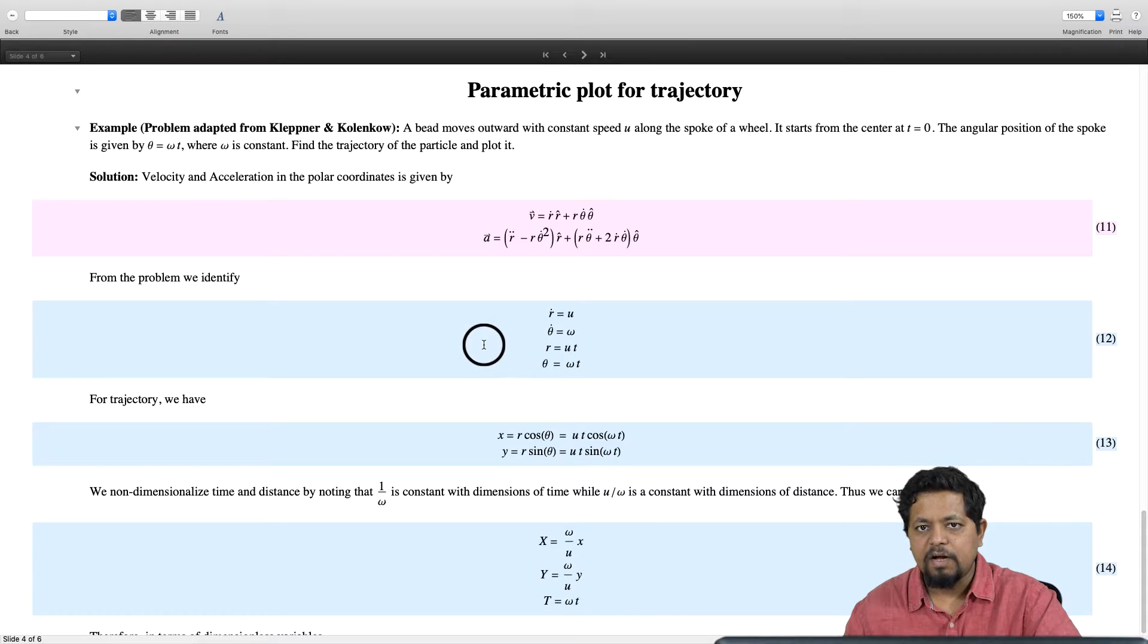For this problem we identify r dot is u, which is always constant, theta dot is omega, also constant. Therefore r is ut and theta is omega t.